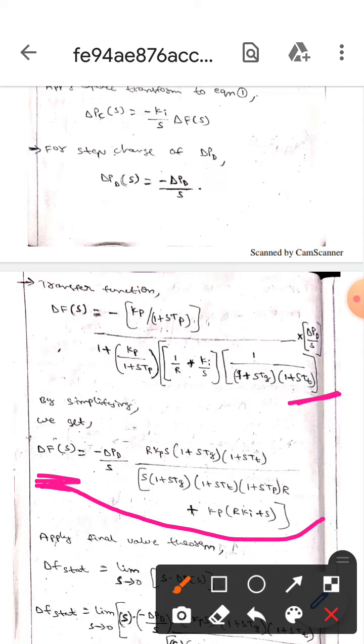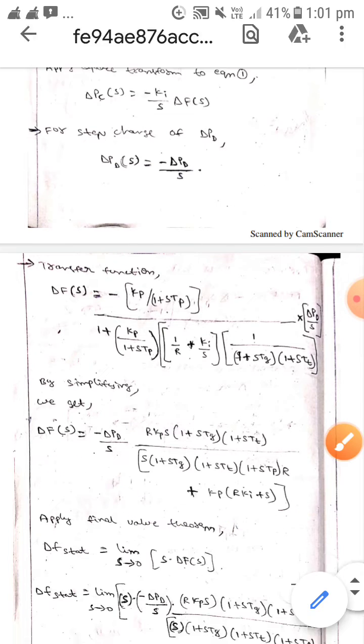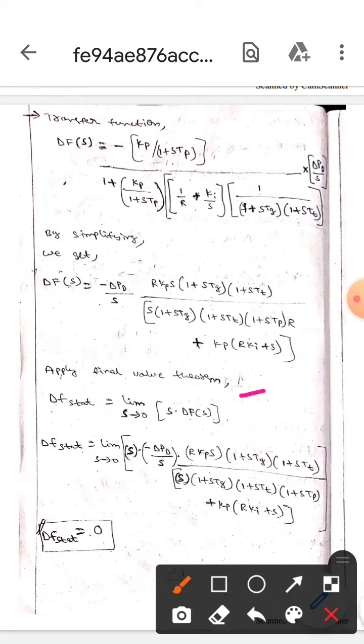We will get delta f of s value like this. By applying final value theorem, we get delta f stat equals limit s tends to 0, s times delta f of s. In place of delta f of s, we will put this value, and ss will be cancelled.